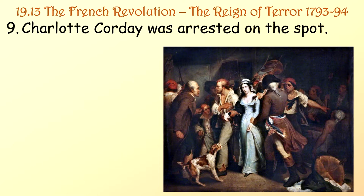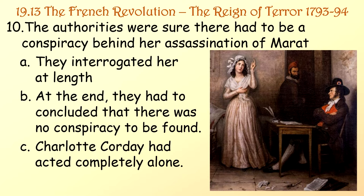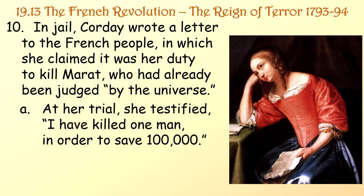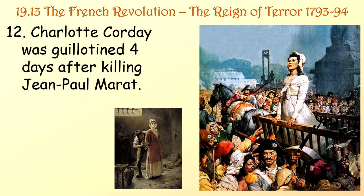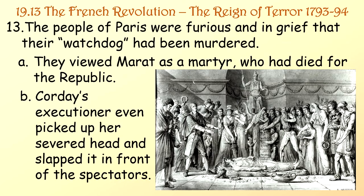Charlotte Corday was arrested on the spot. The authorities were sure there had to be a conspiracy behind her assassination of Marat and interrogated her at length, but concluded there was no conspiracy — Corday had acted completely alone. In jail, she wrote a letter claiming it was her duty to kill Marat, who had already been judged, quote, 'by the universe.' At her trial, she testified, 'I have killed one man in order to save 100,000.' Charlotte Corday was guillotined four days after killing Jean-Paul Marat. The people of Paris were furious and in grief, viewing Marat as a martyr who had died for the Republic.